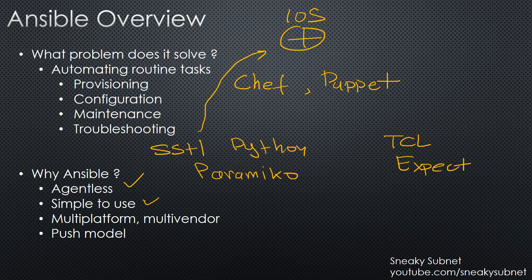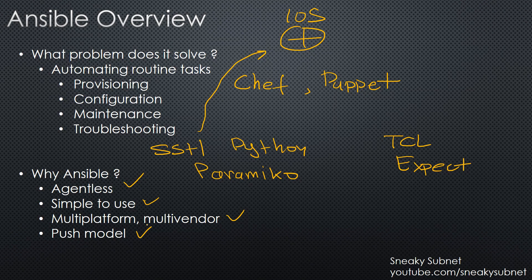Ansible has a huge number of different modules which interact with various types of platforms, OSs, vendors, etc., so Ansible solves this problem as well. And finally, Ansible by default uses a push model, which allows you to start configuring or pushing config exactly when you want. Chef and Puppet, for example, default to a pull model.